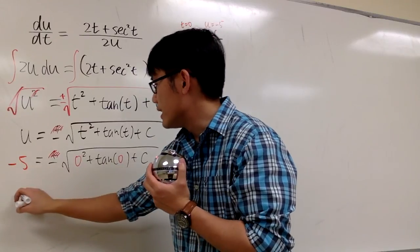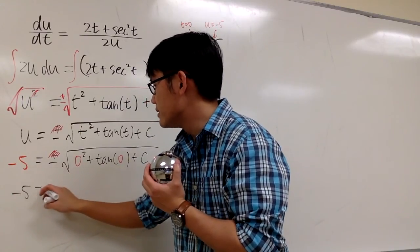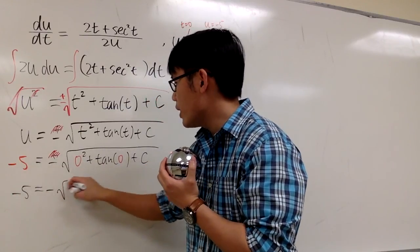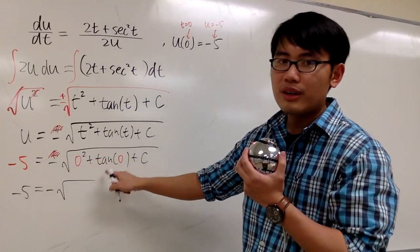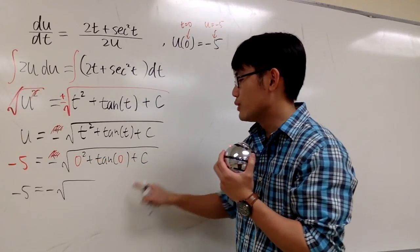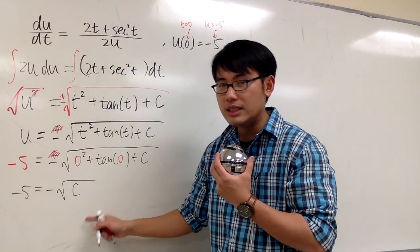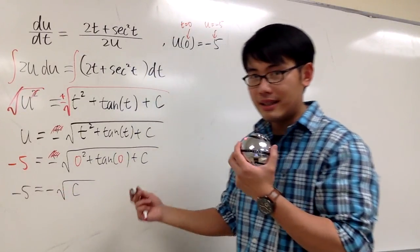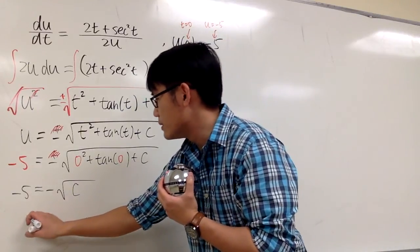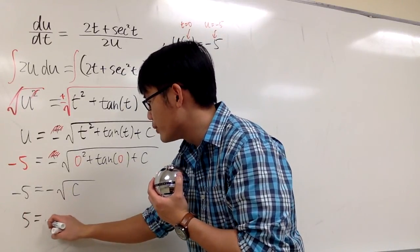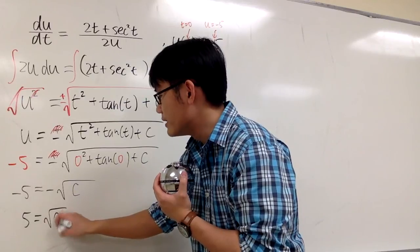And we will see that we have -5 equals -√c, since 0² is 0, tan(0) is 0, and we just have c inside. -5 equals -√c. Of course, we can divide both of them by -1, and we end up with positive 5 equals positive √c.